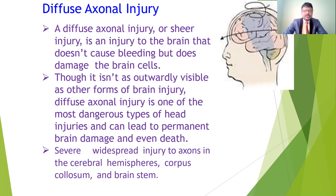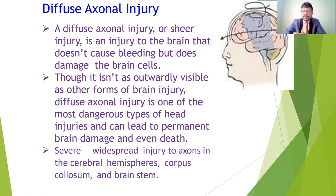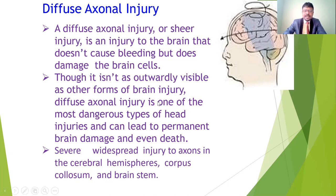Another brain injury is diffuse axonal injury (DAI). DAI, or shear injury, is an injury to the brain that doesn't cause bleeding but damages the brain cells. There is no bleeding, but cells are damaged. Because of axonal damage, there may be permanent injury and even death. Though not outwardly visible like other brain injuries, diffuse axonal injury is one of the most dangerous types of head injury and can lead to permanent damage and death.